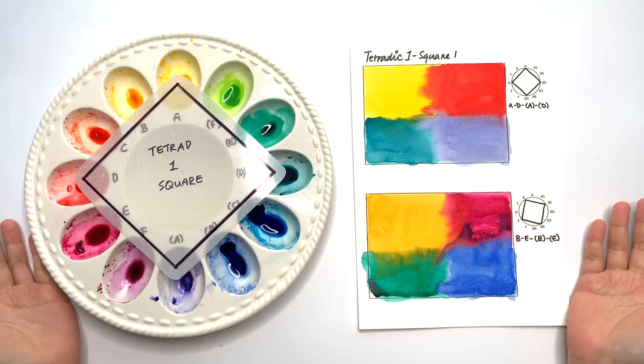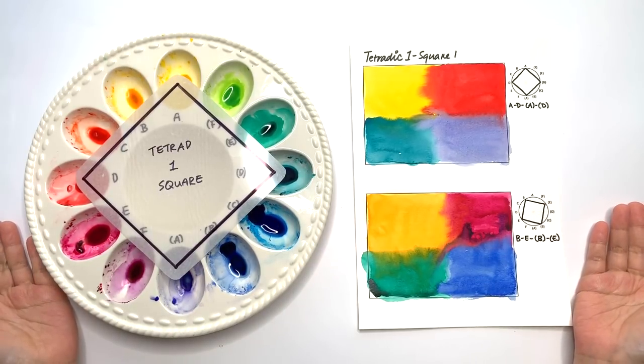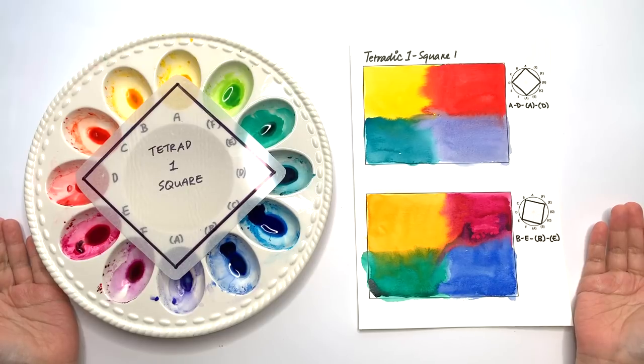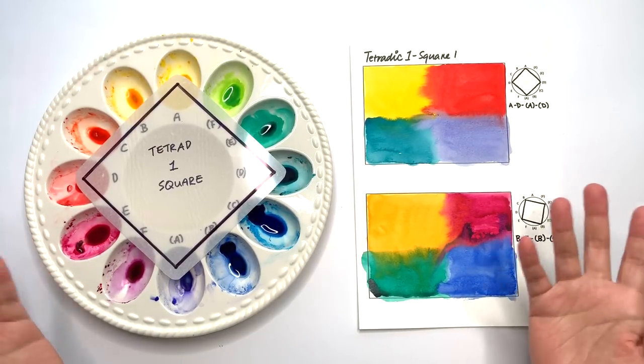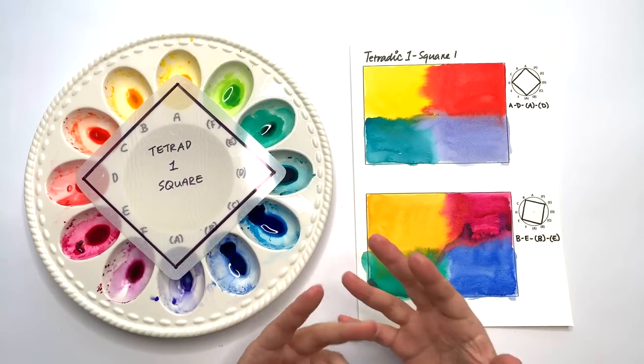Welcome to the final episode of the color theory series. This is the tenth episode of this series and in this episode we're going to cover the tetrad color schemes. Tetrad meaning any group of four.